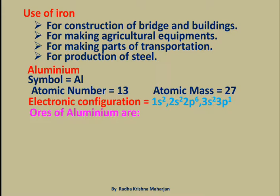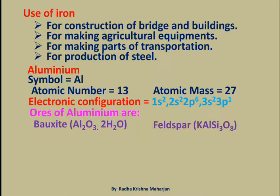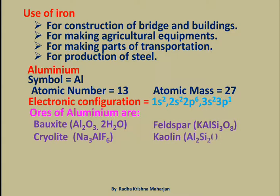Ores of Aluminium are: Bauxite (Al2O3·2H2O), Feldspar (KAlSi3O8), Cryolite (Na3AlF6), and Kaolinite (Al2Si2O7·2H2O).